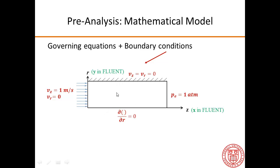This shows the boundary conditions. At the inlet, we specify the velocity to be whatever value we have, in this case 1 meter per second. Typically, where the flow goes out, we specify the pressure, and that's set to 1 atmosphere.